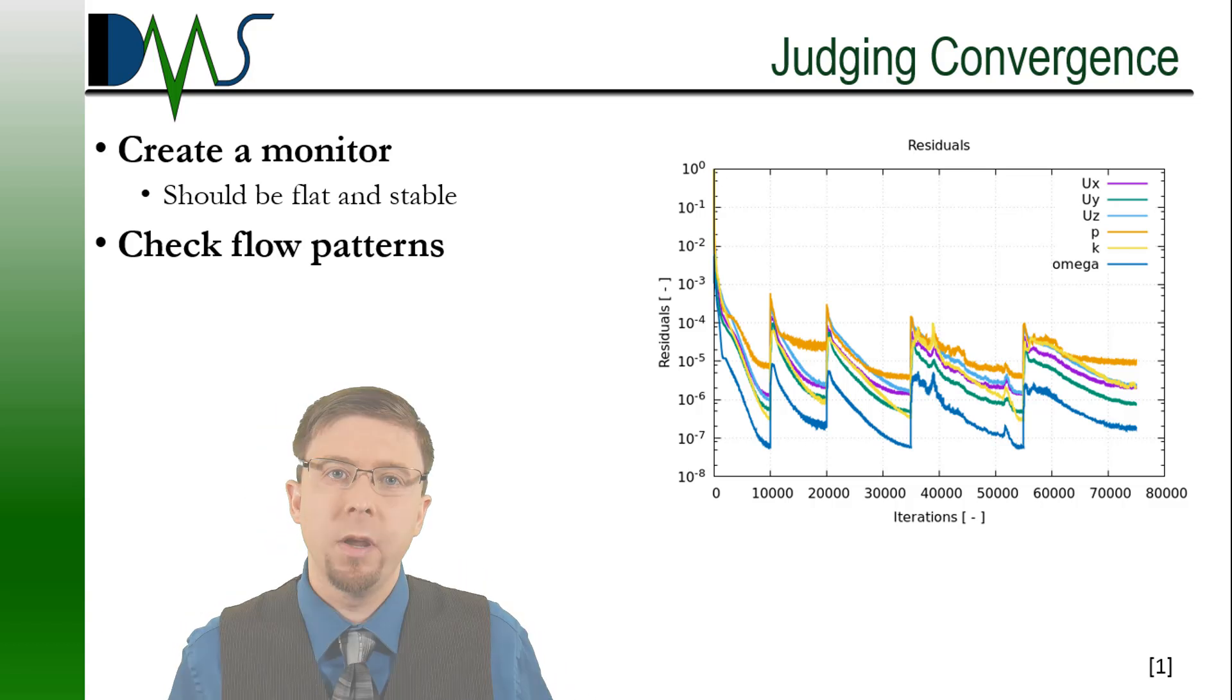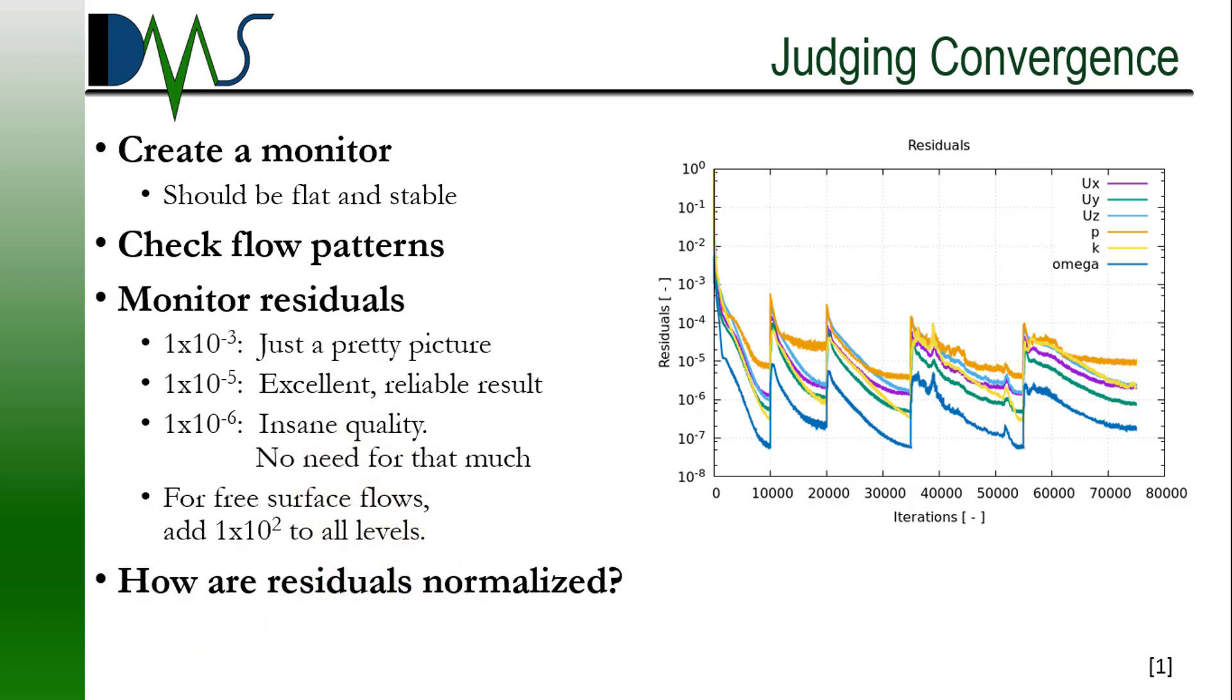And then the last one is your residuals. The residual plot is probably the biggest thing you're going to use for judging convergence. And it's a pretty dense plot. There's a lot of information that gets packed into it. So let's unpack this.